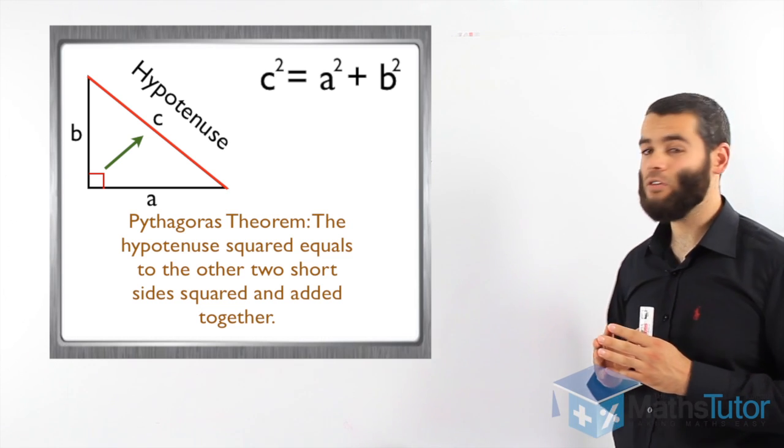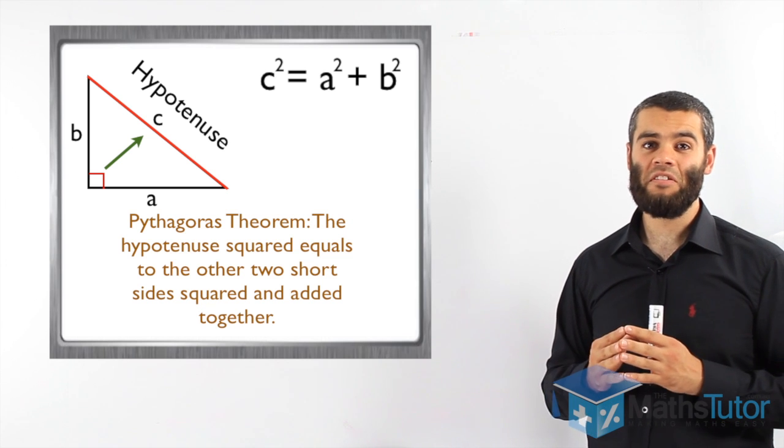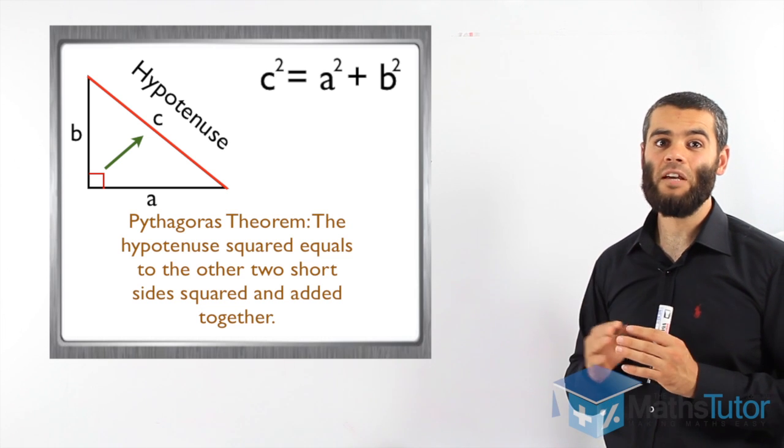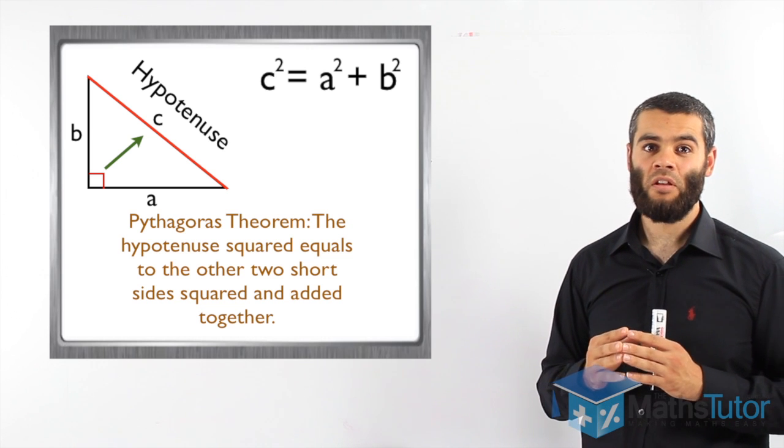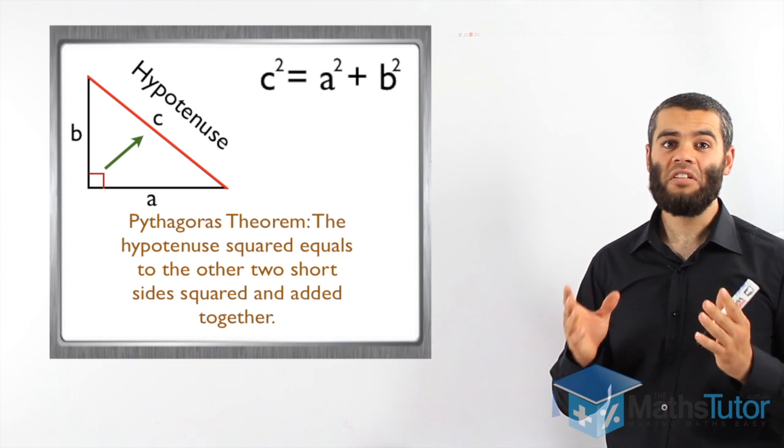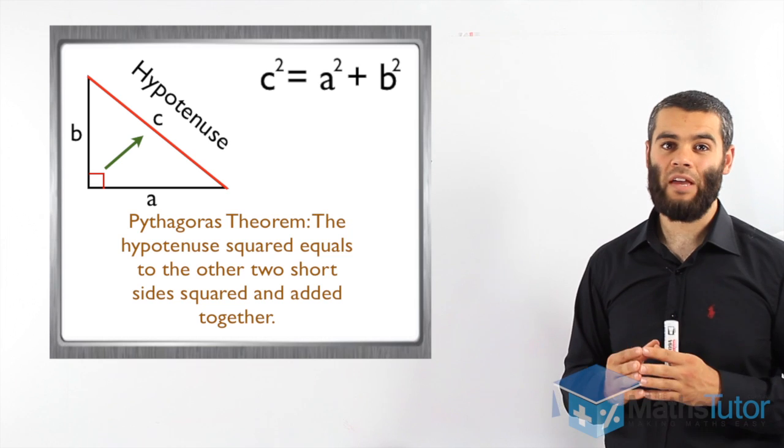If we have a right-angled triangle and one of the sides is missing, we can actually use this rule and this concept to find the other missing side. Today, we're going to see how to find the missing hypotenuse using Pythagoras.